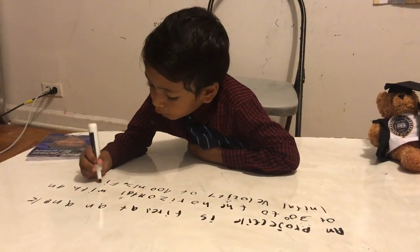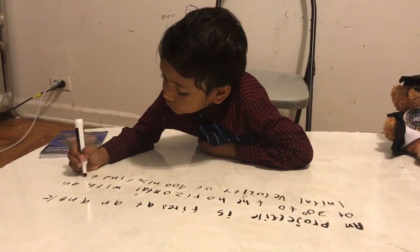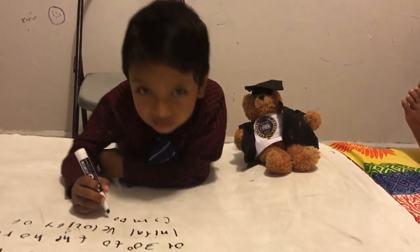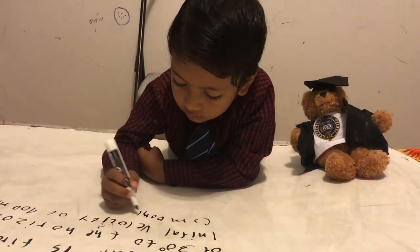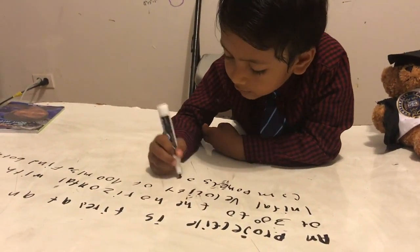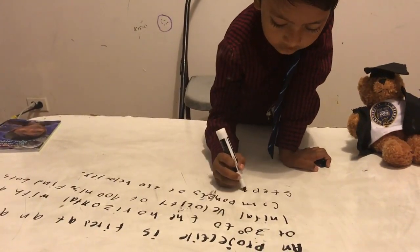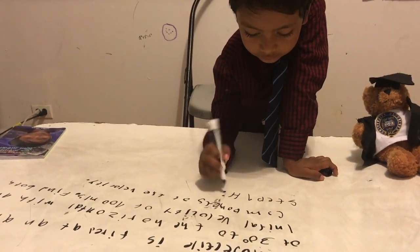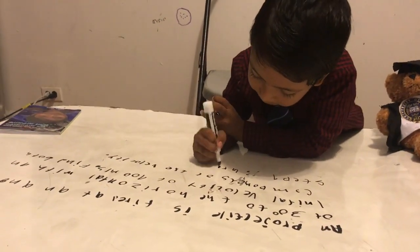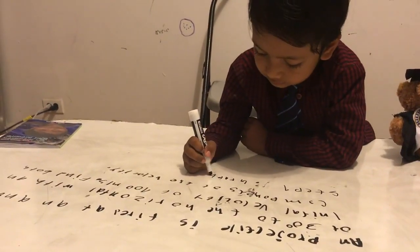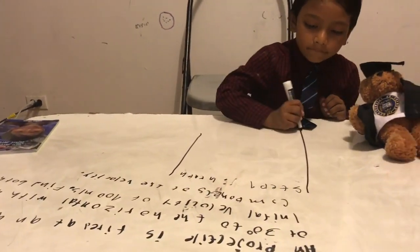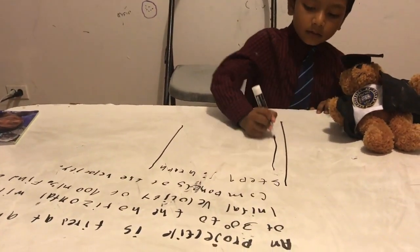Find both components of the velocity. We have to do the graph. So, this is the graph.